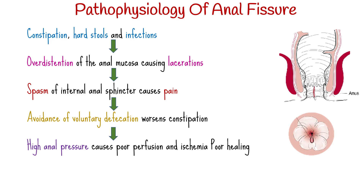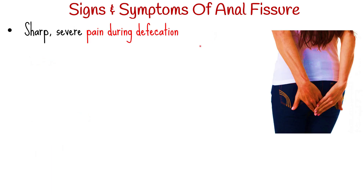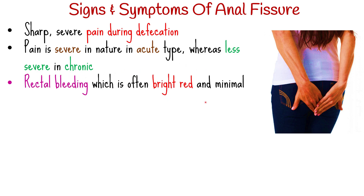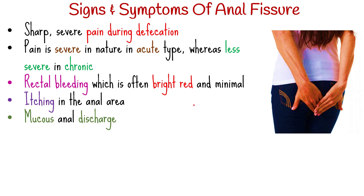The resulting high anal pressure causes poor perfusion of the anoderm and eventually results in local ischemia. This leads to poor healing, and if not intervened early enough, it might progress to chronic anal fissure. The clinical features manifest as sharp, severe pain during defecation — severe in acute type, less severe in chronic. Rectal bleeding is often bright red and minimal, with itching in the anal area and mucoid anal discharge.